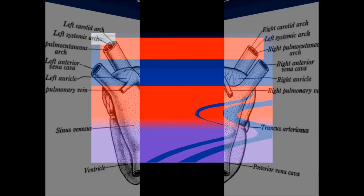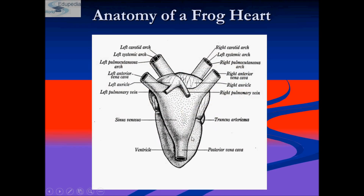The frog's heart is covered by a membrane called pericardium. A triangular structure called the sinus venosus joins the right auricle and receives blood through a major vein called the vena cava. The ventricle opens into a sac-like structure called the conus arteriosus, located on the ventral side of the heart, which is not visible in the diagram since it is present on the ventral side.